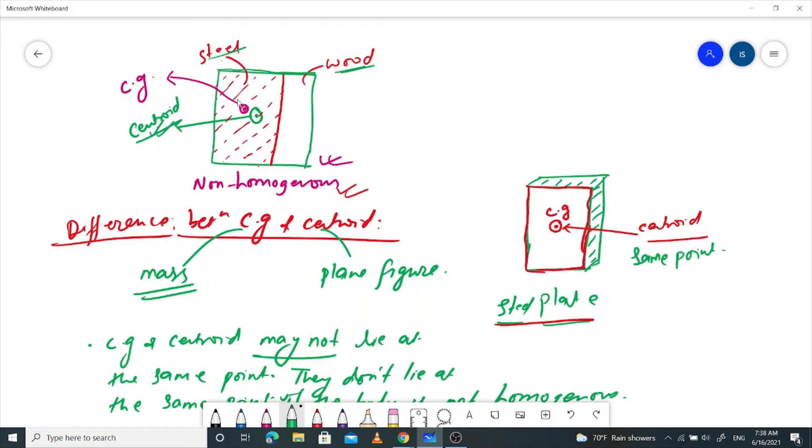The center of mass and the centroid are far from each other because they are far from. So, we need to find the different things, so we can see the difference between CG and centroid.